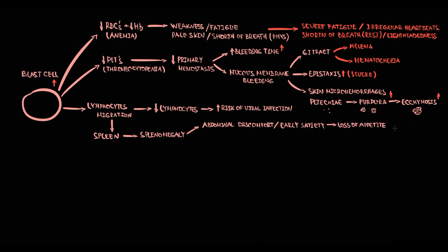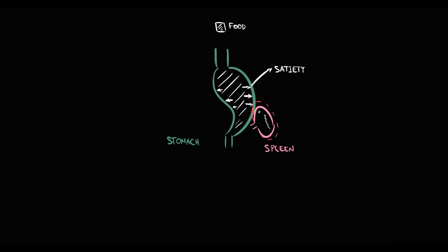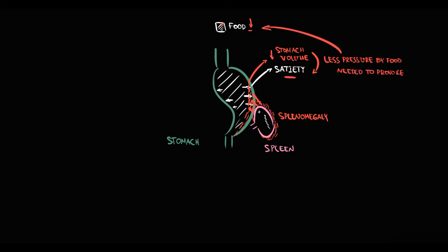Splenomegaly manifests with abdominal discomfort and early satiety, which causes loss of appetite. Abdominal discomfort occurs because the enlarged spleen compresses nearby anatomical structures. Loss of appetite is explained by the spleen compressing the stomach, reducing its volume. Therefore, less food is needed to increase intragastric pressure and distend the gastric walls, provoking a sense of satiety earlier. As a result, patients with splenomegaly have loss of appetite, and decreasing food consumption can lead to weight loss.